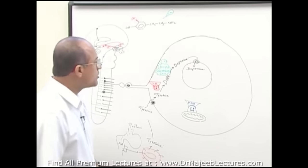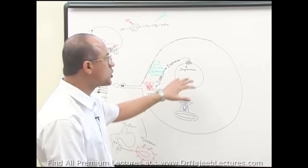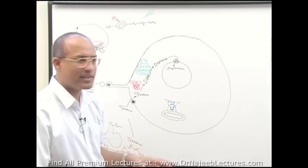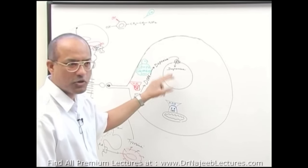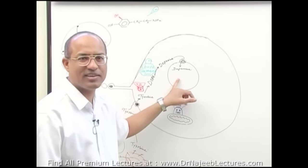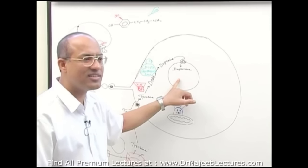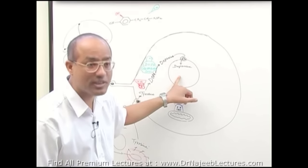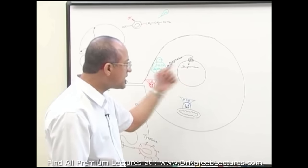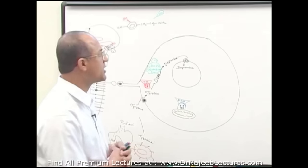Once dopamine is concentrated into vesicles, if the neuron is dopaminergic it is stored and released as dopamine. But in a noradrenergic neuron, one more step is needed: conversion of dopamine to norepinephrine. Inside the vesicle membrane, an enzyme called dopamine beta-hydroxylase (also called dopamine beta-oxidase) adds a hydroxyl group at the beta carbon, converting dopamine into norepinephrine.